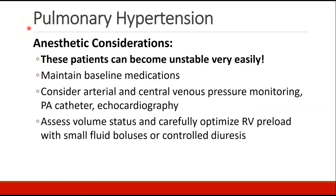Regarding anesthetic considerations in patients with pulmonary hypertension: these patients can become unstable very easily and are among the sickest patients you may care for. We start by maintaining the patient's baseline medications. Consider arterial and central venous pressure monitoring, as well as possibly using a pulmonary artery catheter or echocardiography. We want to carefully assess and optimize volume status so that right ventricular preload is optimized using small fluid boluses or controlled diuresis.